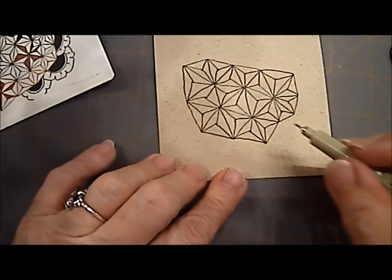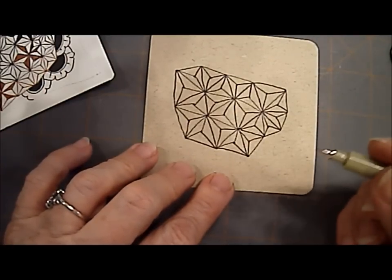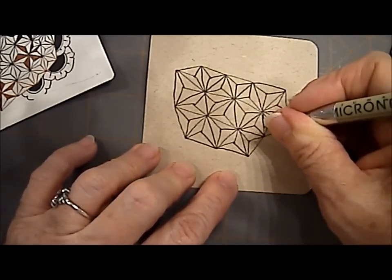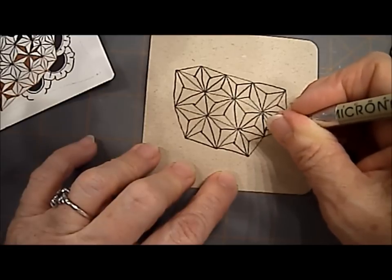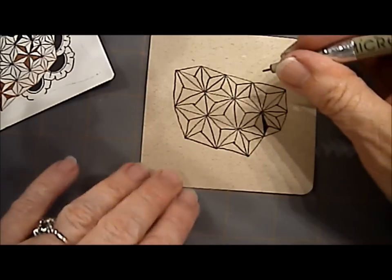And you can just keep going until you fill up your whole area. Another fun thing you can do with Tristar is you can color in. And I'm just going to color in just one side of my triangle that I've sectioned off.